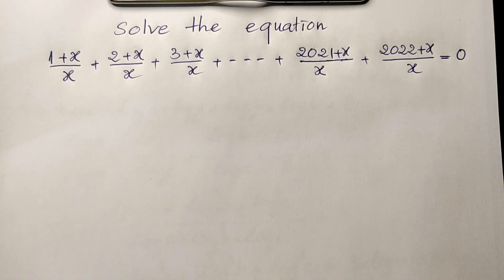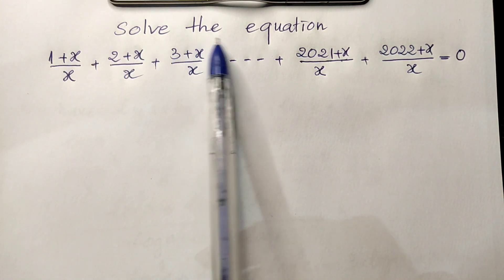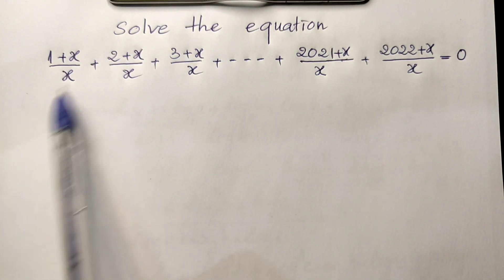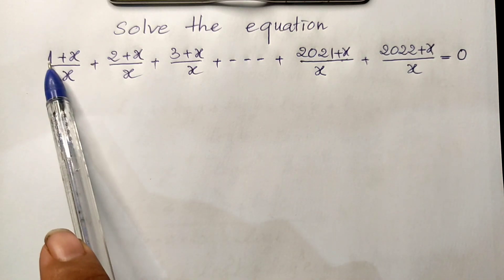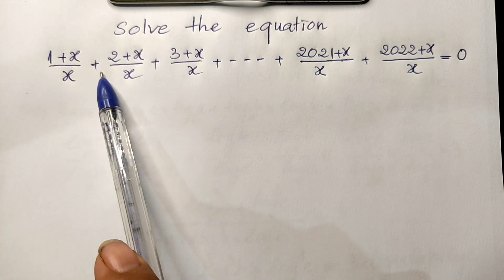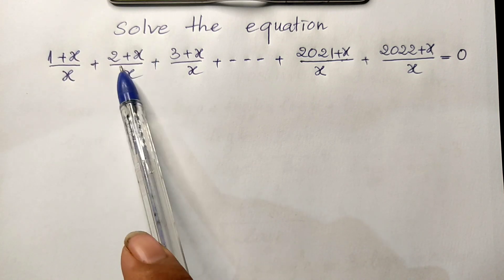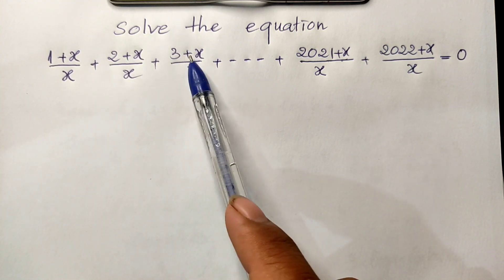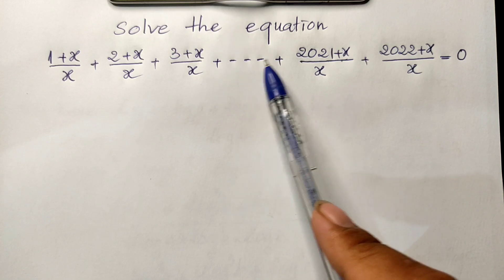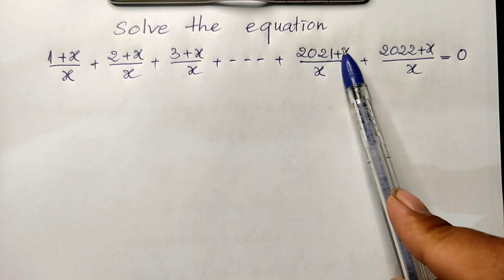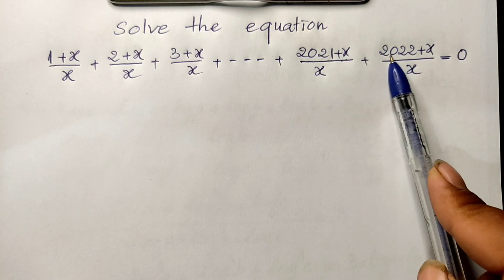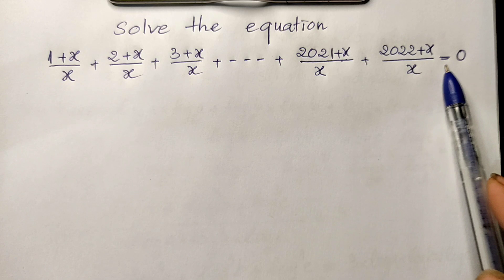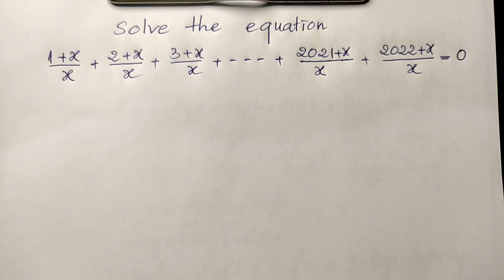Hello everyone, welcome to my YouTube channel. Today I have one exercise — solve this equation on paper. The equation is: 1 plus h divided by h, plus 2 plus h divided by h, plus 3 plus h divided by h, plus ... plus 2^21 plus h divided by h, plus 2^22 plus h divided by h, equal 0.